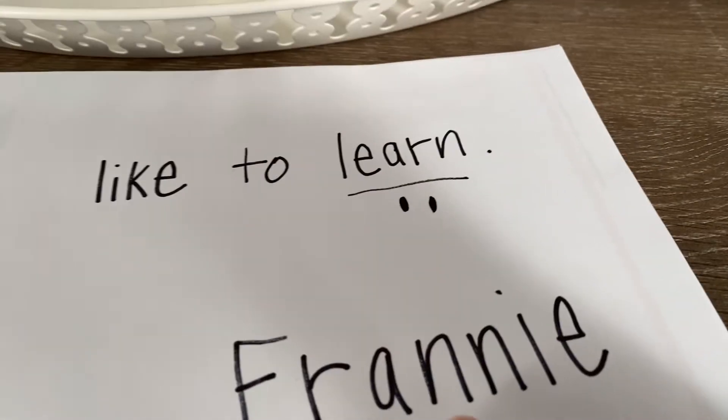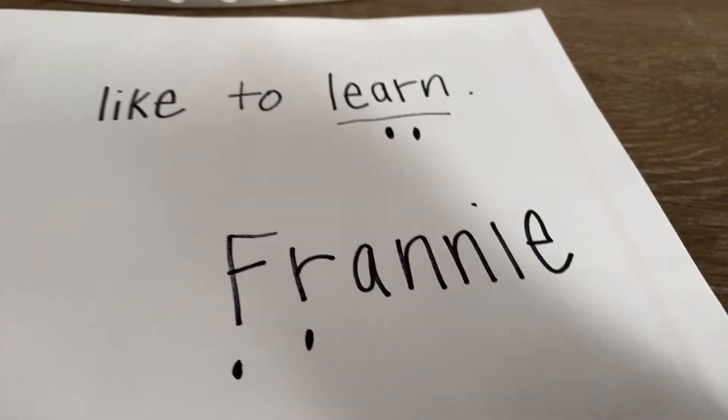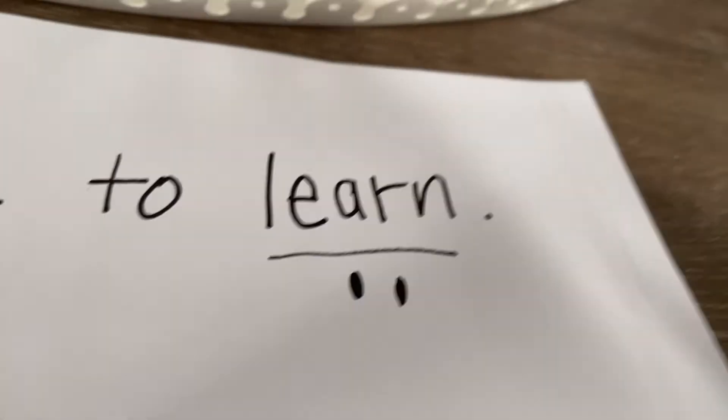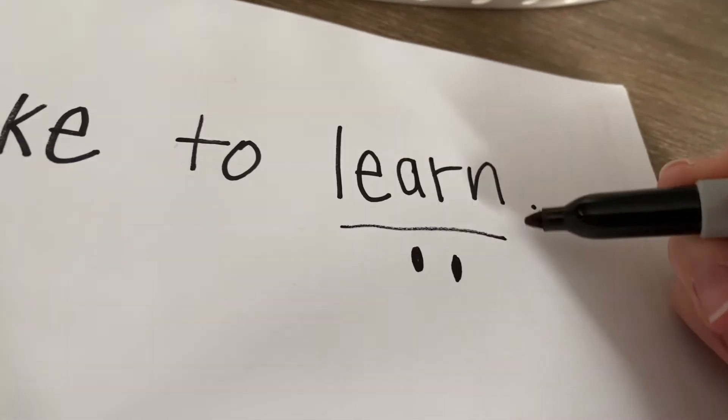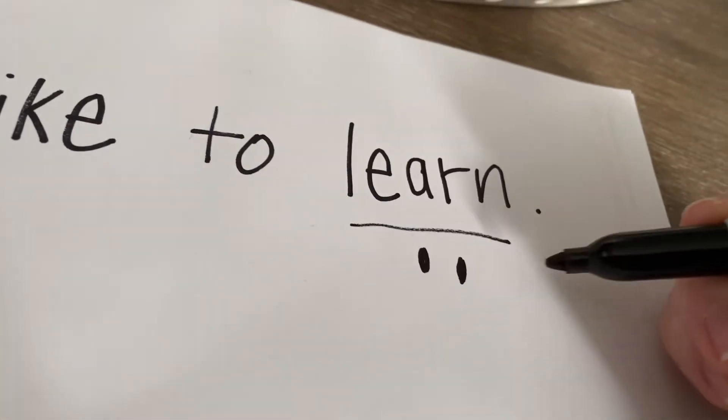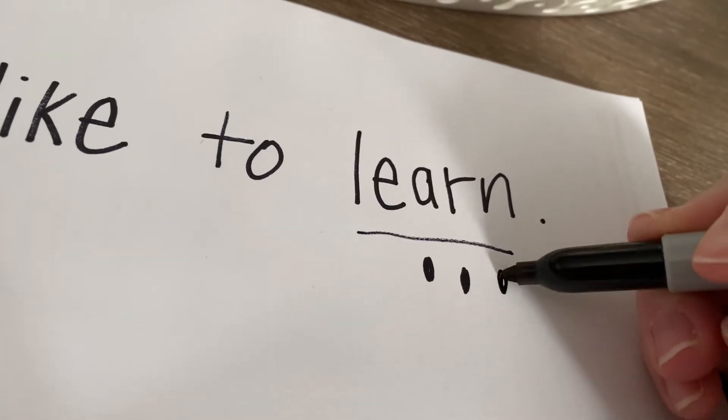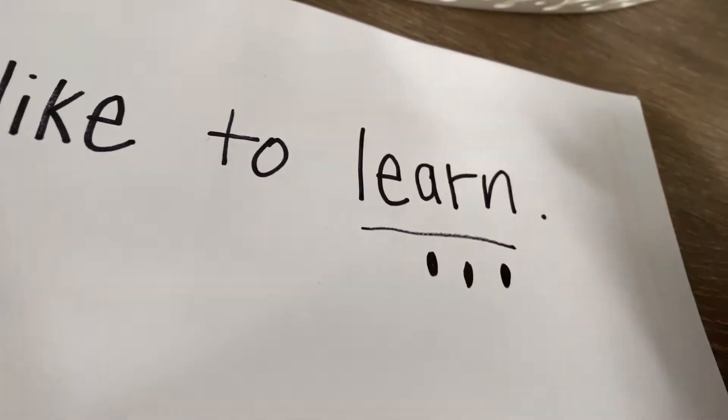So Franny has two of the same letter, letter N, right next to each other in her name. So let's look up here and see if we can find a letter N in our word 'learn.' And there it is, hanging out at the end of our sentence. So we're going to put a mark right there.